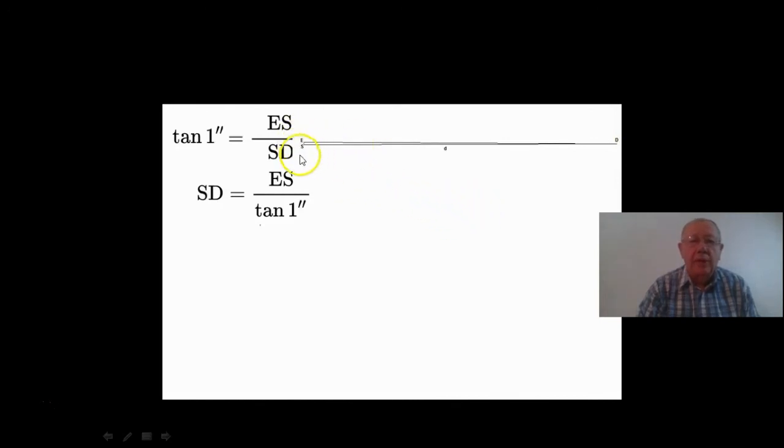Now tan of this angle, that is ES this distance here over this distance SD, would be tan of one arc second. Now if we rearrange this, we can get this distance here d equal to this distance earth to the sun over tan of one arc second.